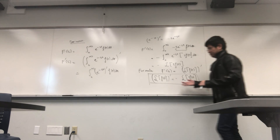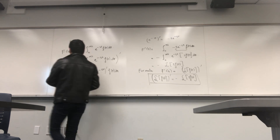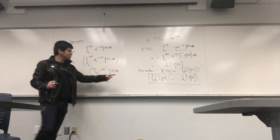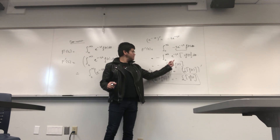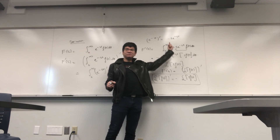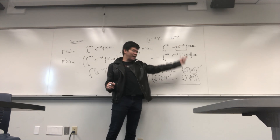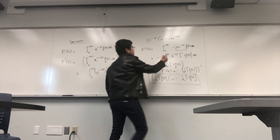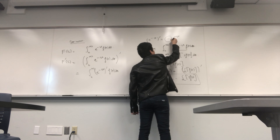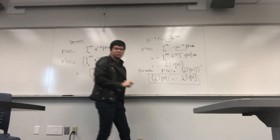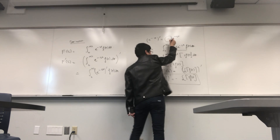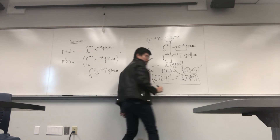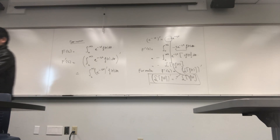The idea of the proof is simple: when you take the derivative of e^{-st} with respect to s, you get −t. This −t is why we have a minus t in the formula. So taking the derivative in s of e^{-st} gives −t, and this −t appears in the result.